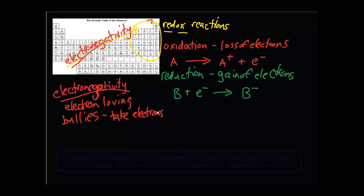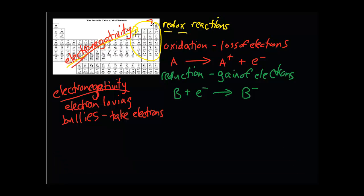As a result, everything in group seven will ultimately obtain a negative one charge, because it just needs that one electron — that gain of one negatively charged electron — to make the octet. So you're going to have F⁻, the charge on a chlorine ion is going to be Cl⁻, bromine ion is going to be minus one, and iodine is going to become I⁻. Minus just means it has a minus one charge — that one can be invisible, but you can write it in if you'd like.